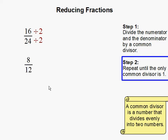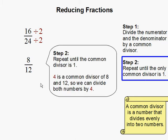Step 2. Repeat until the only common divisor is 1. 4 is also a common divisor of 8 and 12, since 4 can go into both 8 and 12. So we can divide both numbers by 4. And it's important that you have to divide both the numerator and the denominator by one number.